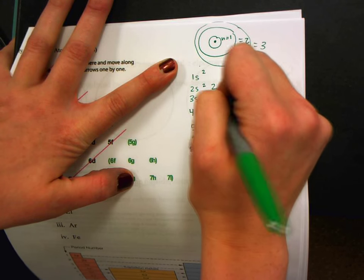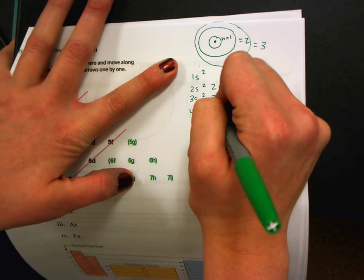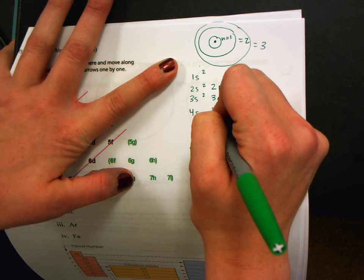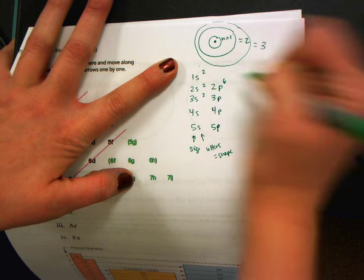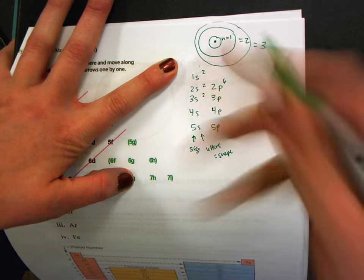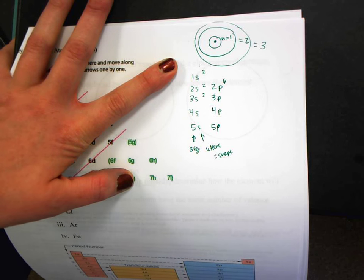Then we go to a different shape called the p orbital. So you're going to go 2p, 3p, 4p, 5p. p can hold 6 electrons. So it's just a little bit different shape that lets us hold more electrons.